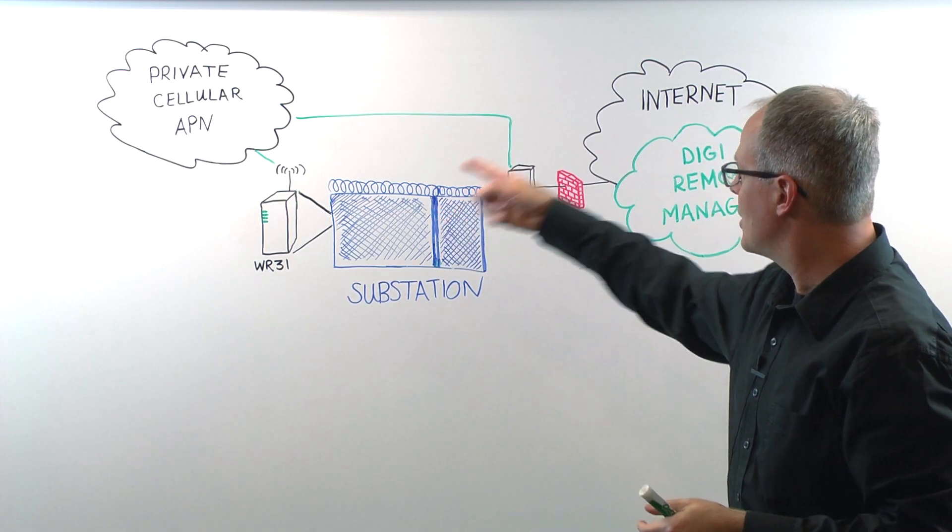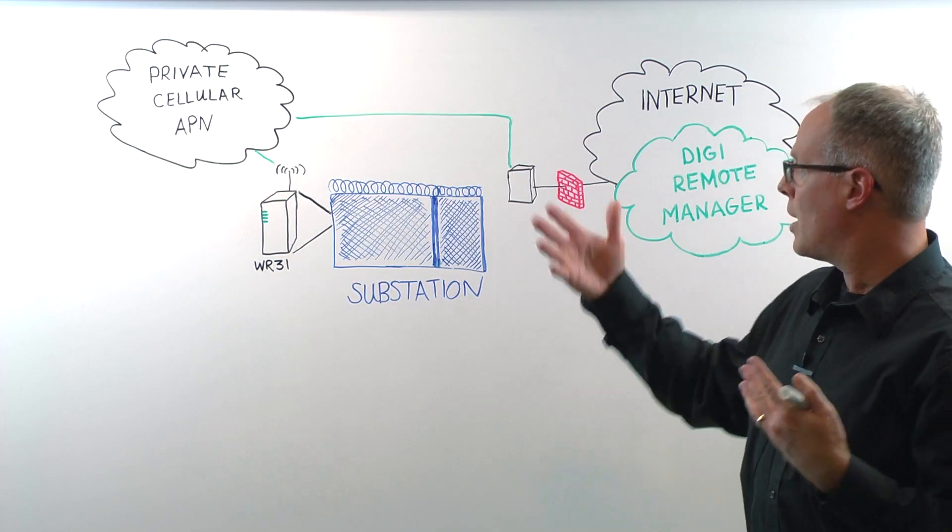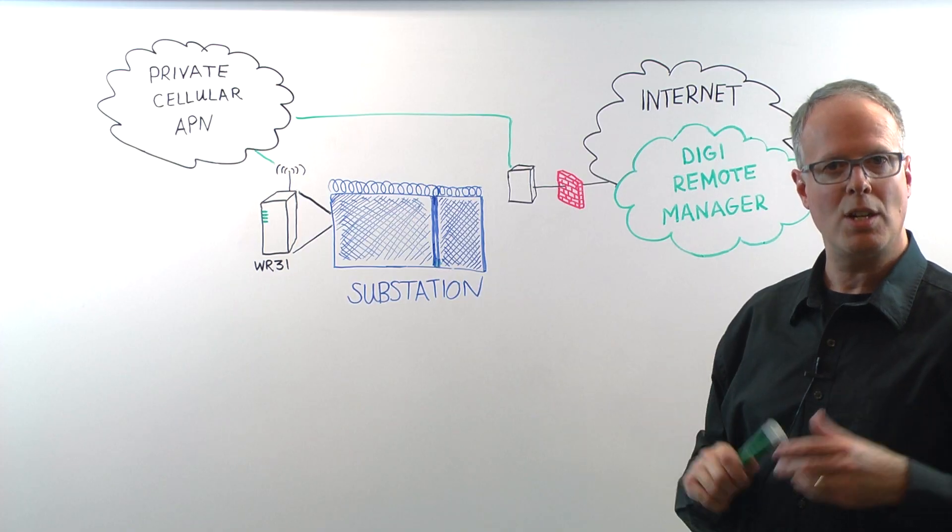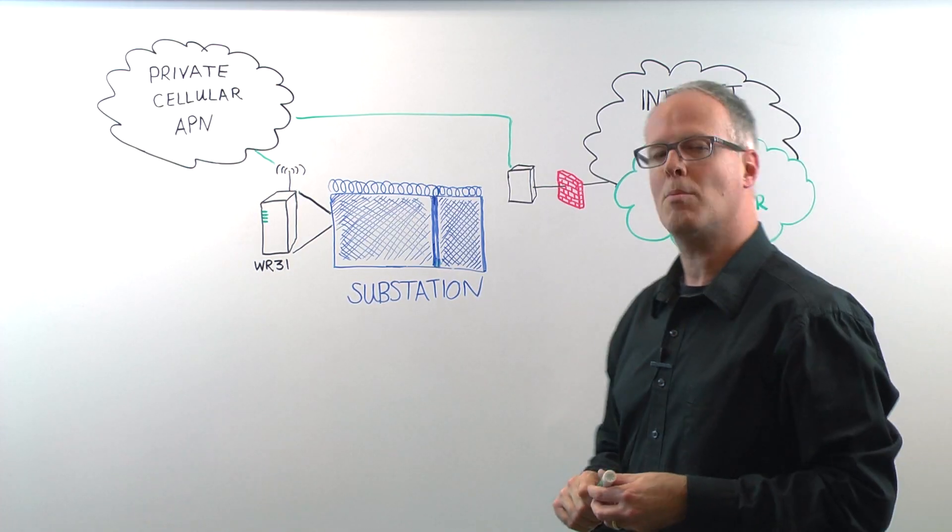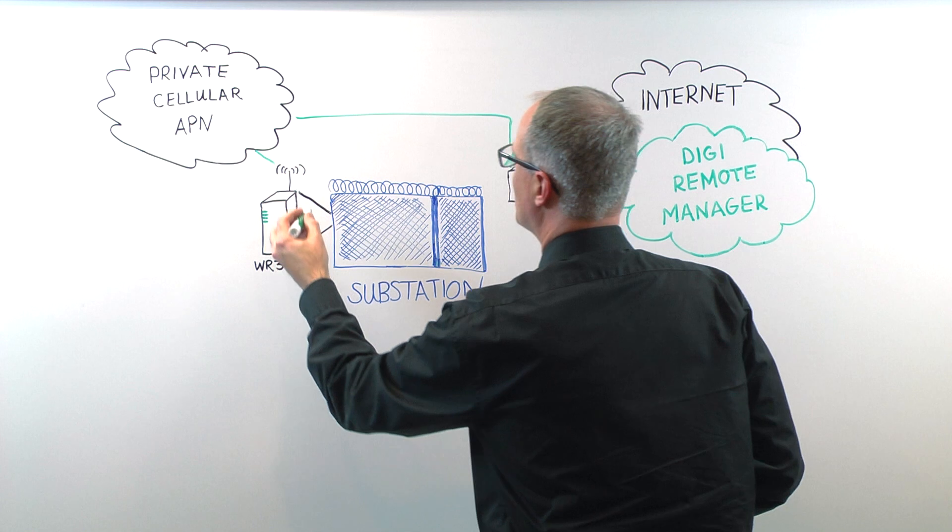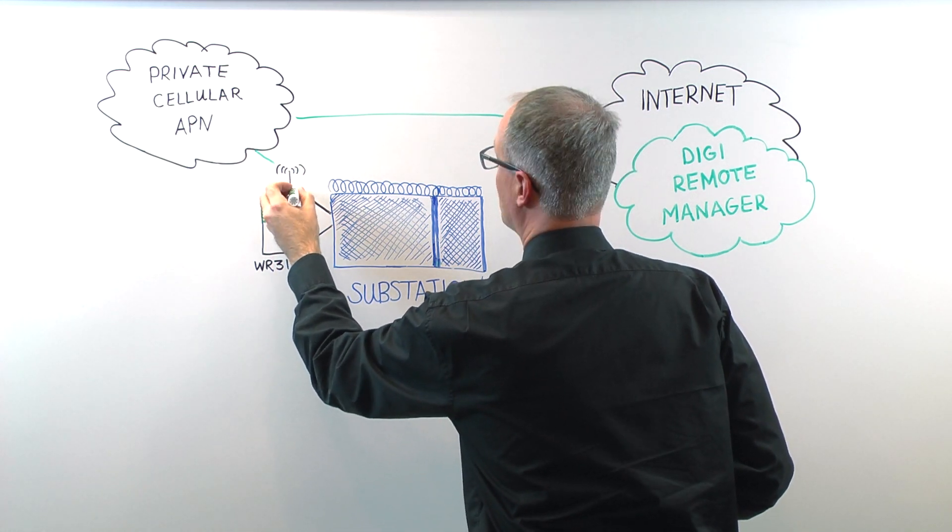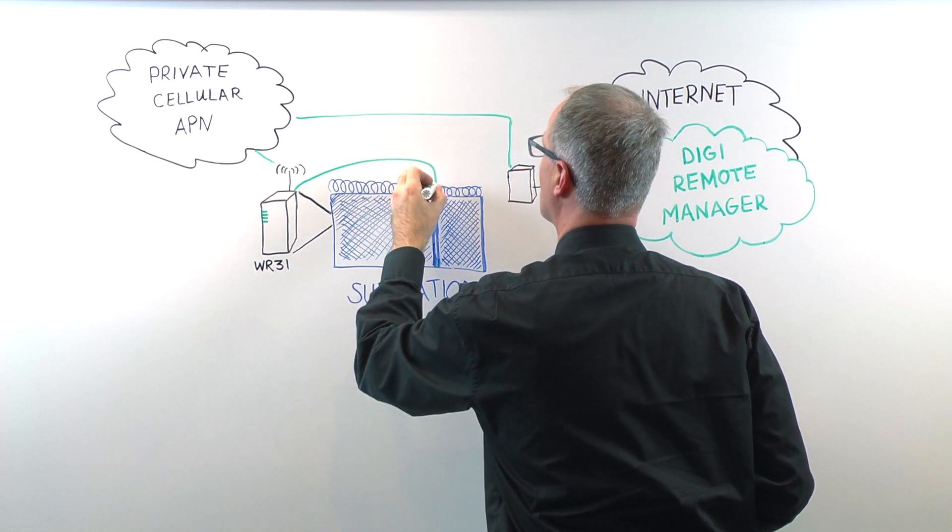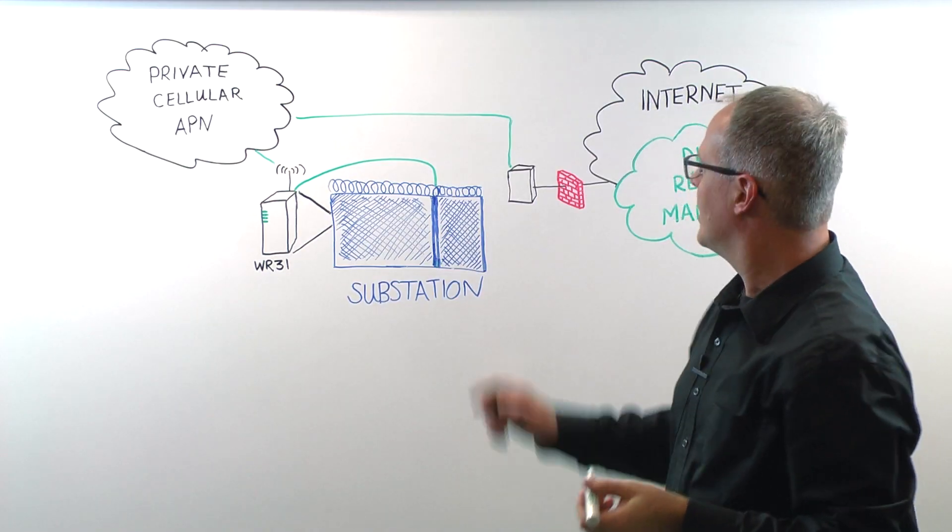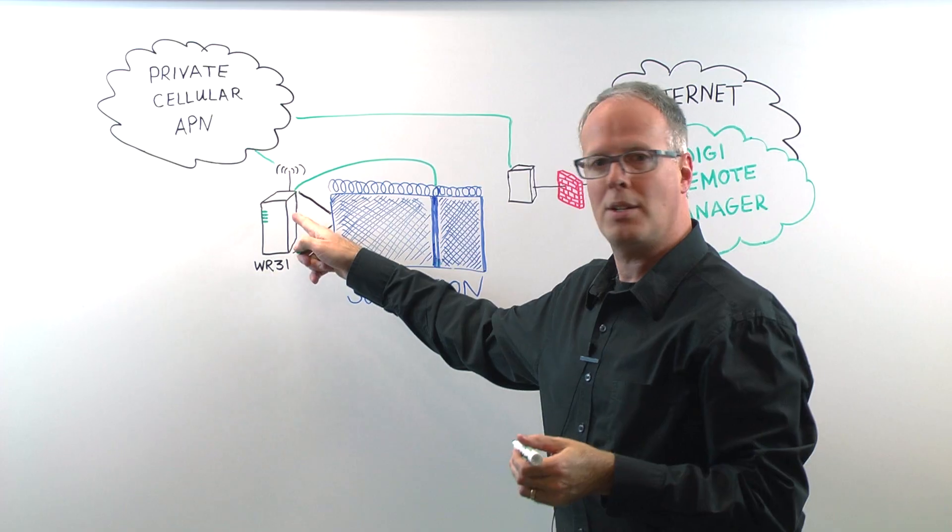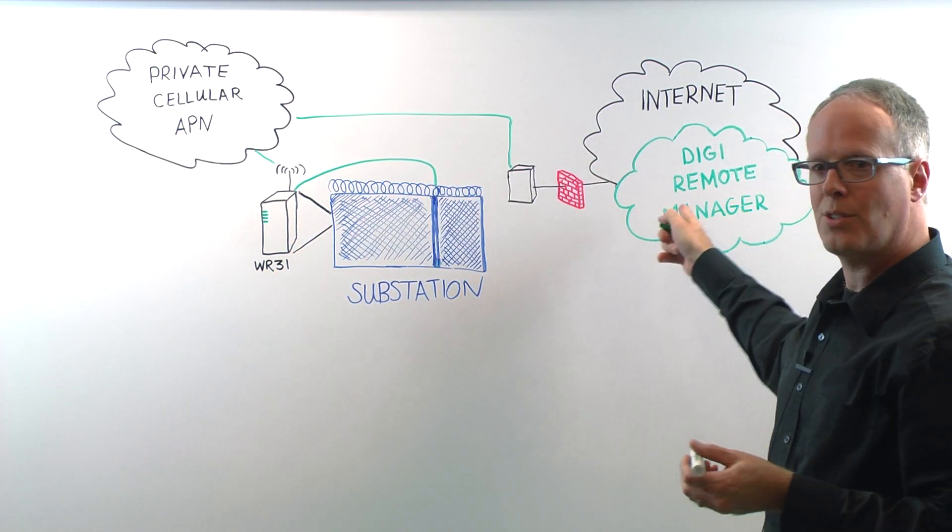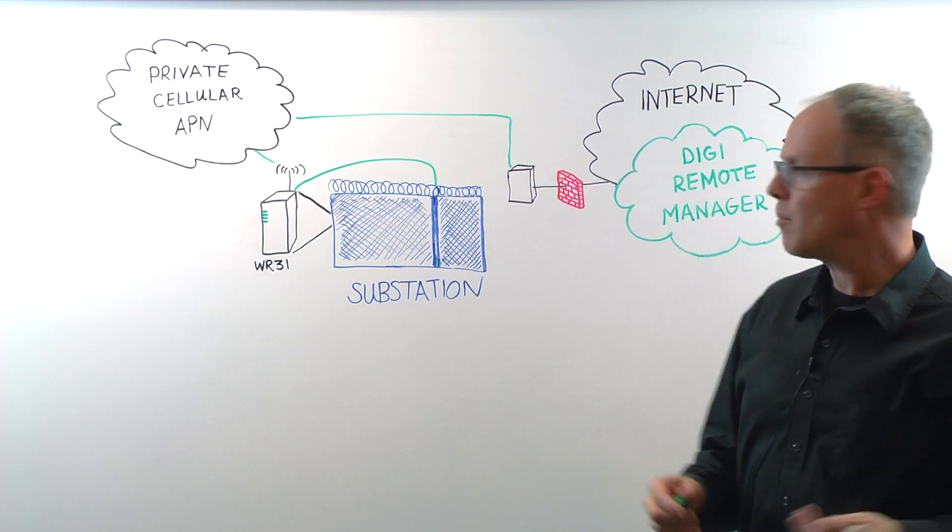So now that you have your connection, you can do things like monitor your remote site. Let's say you want to detect when somebody's trying to break into your facility. If you have sensors set up on doors or motion sensors to detect when somebody has broken in where they don't belong, you can have the WR31 notify Remote Manager, which in turn sends an alert out to your enterprise management system.